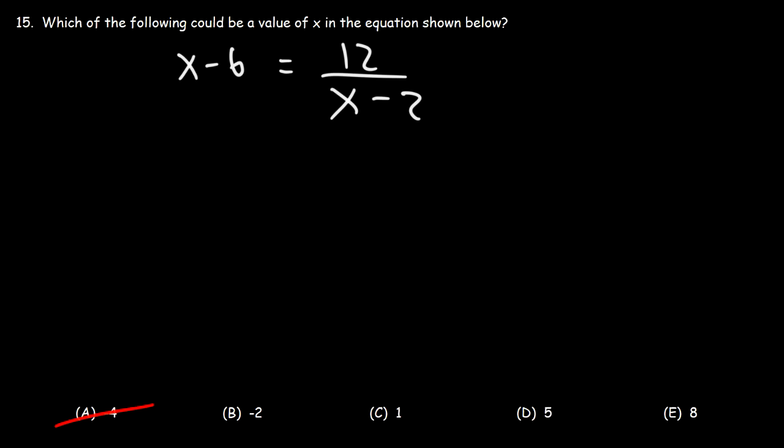So what do you think we need to do at this point in order to solve the equation? What is our next step? Now, let's write x minus 6 over 1. So now we have two fractions separated by an equal sign. So we can cross multiply.